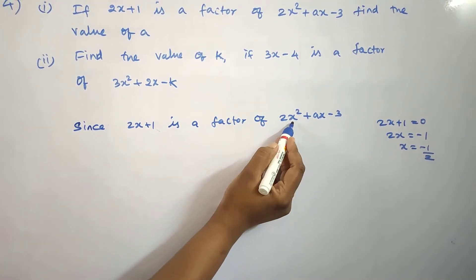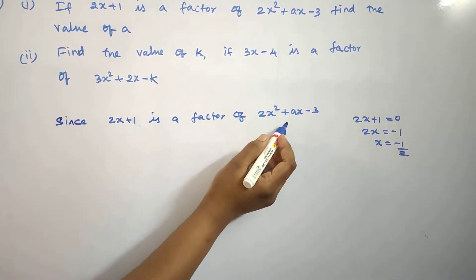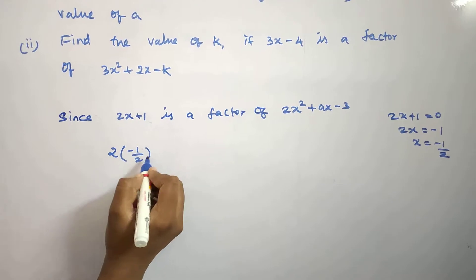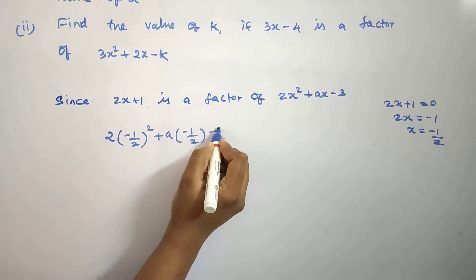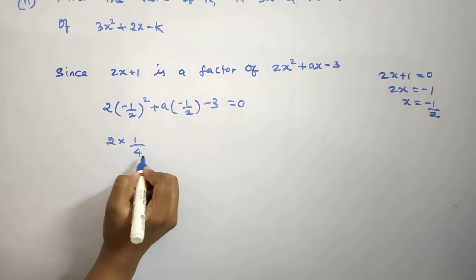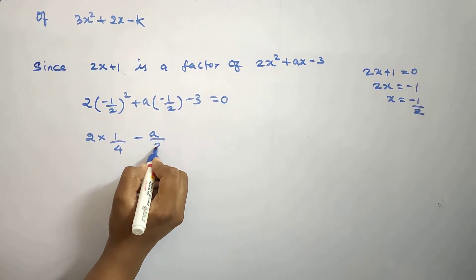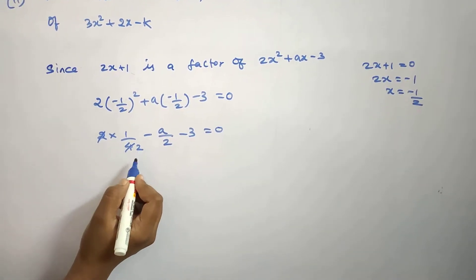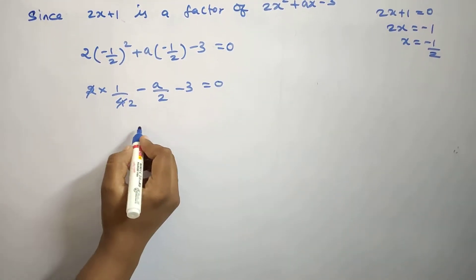In this expression we have to substitute the value x equals minus 1 by 2 and set it equal to 0. So 2 into minus 1 by 2 the whole square, plus a into minus 1 by 2, minus 3 equals 0. Simplifying: 2 into 1 by 4 gives 1 by 2, and minus a by 2 becomes plus a by 2.